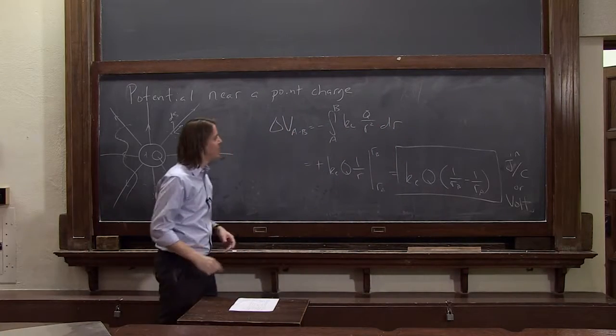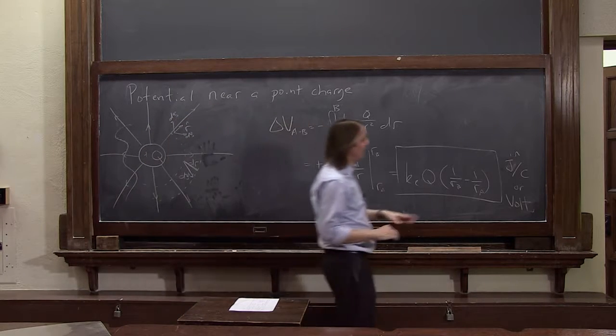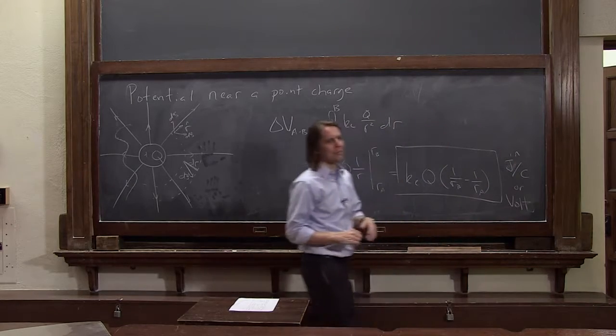We abbreviate with v, which is the same symbol we're about to start using for the potential, which gets a little confusing. But in terms of units, v is for volts, or you could call it a joule per coulomb. That's not very common.